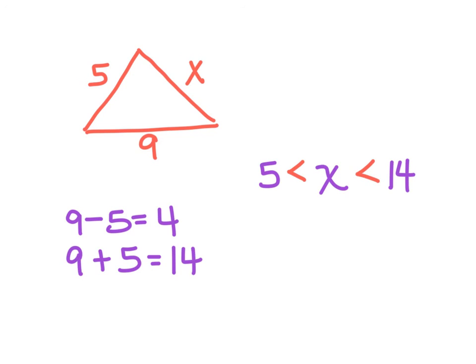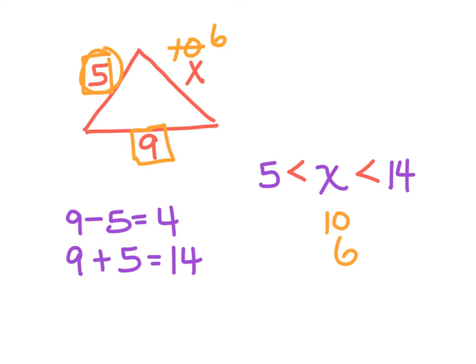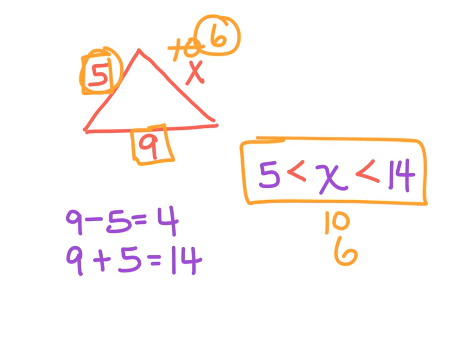Just to test, let's try 10 — that's between 4 and 14. If this was 10, I'll add my two smaller sides, 9 and 5 — that's 14, which is definitely bigger than 10. Let's try 6. If this was 6, add my two smaller sides, 6 and 5 — that's 11, which is bigger than 9, so that works. So any number between 4 and 14.